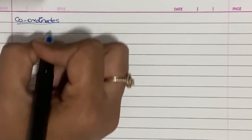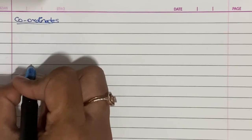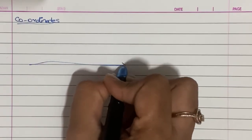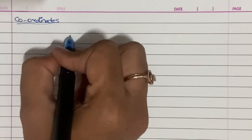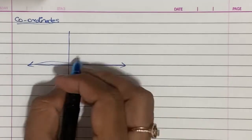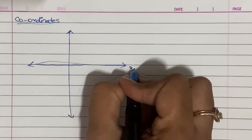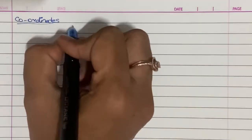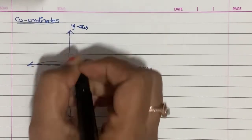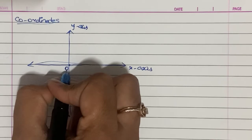So, what are coordinates? First, I will show you the coordinates. We have the x-axis and the y-axis. This is the x-axis. This is the y-axis. The point where they intersect is called the origin, which is 0.